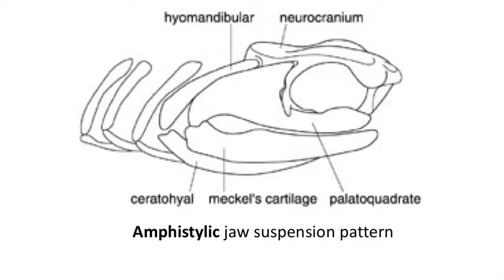The first jaw suspension pattern is the amphistylic jaw. This is where the palatoquadrate is firmly attached to the neurocranium, such that the only jaw joint is between the palatoquadrate and Meckel's cartilage, or the lower jaw. This is found in primitive groups of sharks like Cladoselache from the Devonian. Note that the hyomandibular and ceratohyal cartilage has limited involvement in the jaw joint.